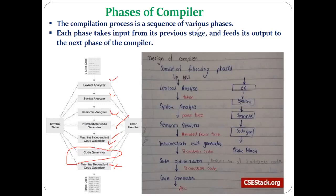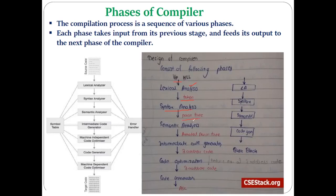The compilation process consists of various phases where each phase takes input from the previous stage, produces some output, and gives that output to the next phase. The first phase, lexical analysis, takes higher-level language input and generates tokens. Those tokens are passed to the syntax analyzer, which checks whether expressions are syntactically correct by generating a parse tree. The syntax analyzer passes the parse tree to the semantic analyzer, which checks the meaning of statements by generating an annotated parse tree. Then the intermediate code generator produces three-address code.